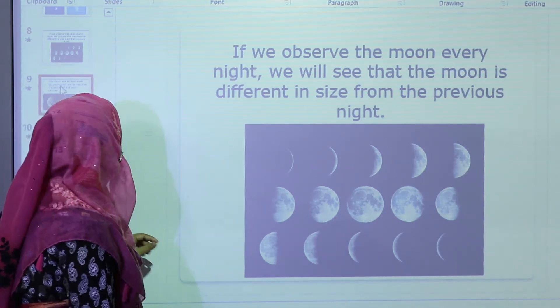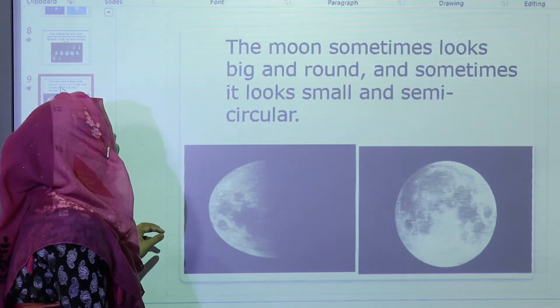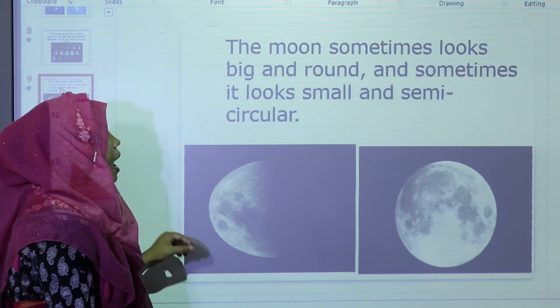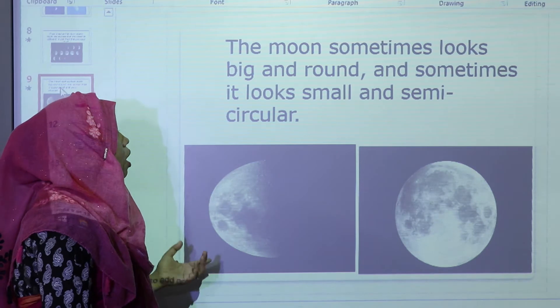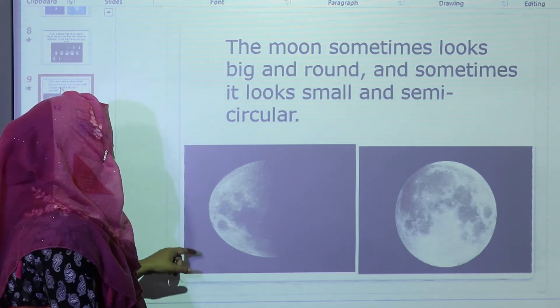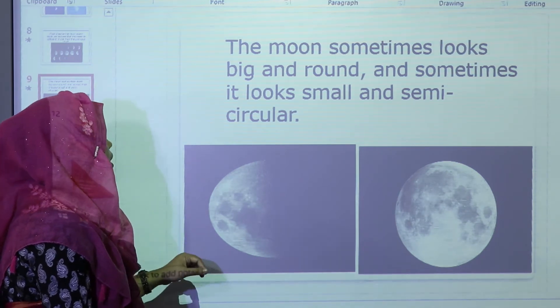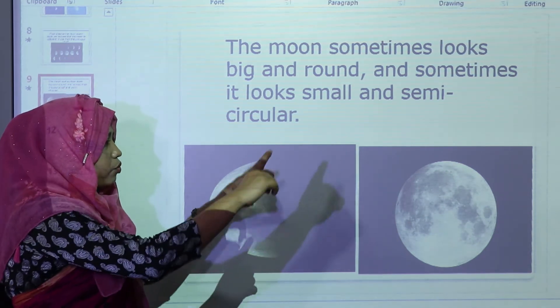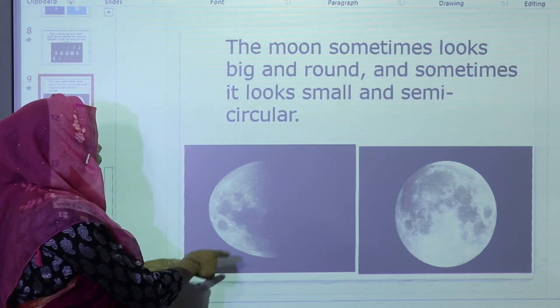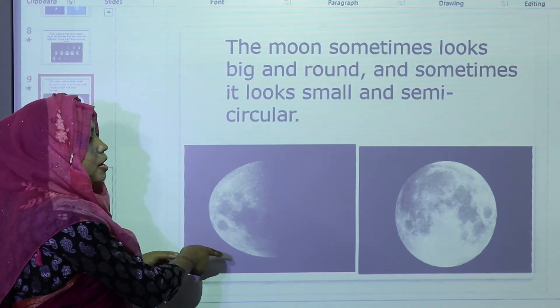The moon sometimes looks big and round, and sometimes it looks small and semi-circular. In the picture we can easily understand - the second picture shows that the moon is very round and full. The first picture has some dark and some light parts, it means semi-circular, not a full moon.